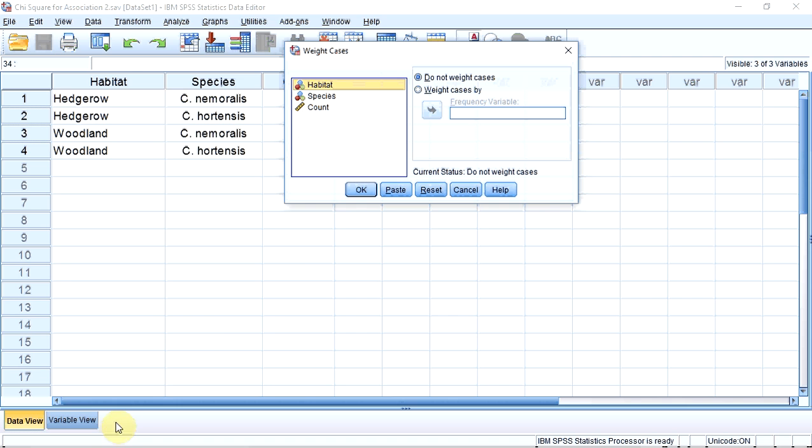I am now going to click the Weight cases by radio button, select the count variable, and enter it into the frequency variable box using the arrow. Then press OK.